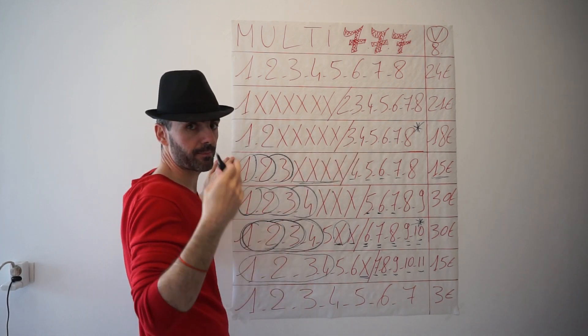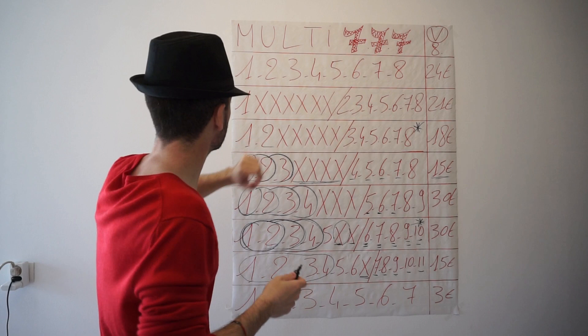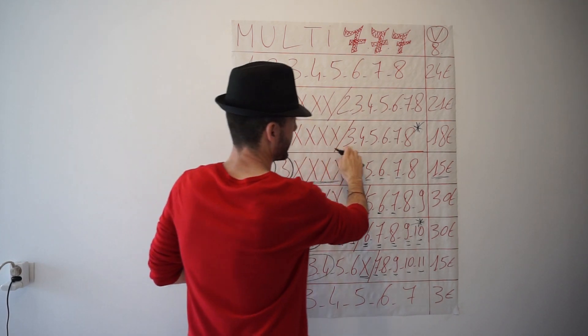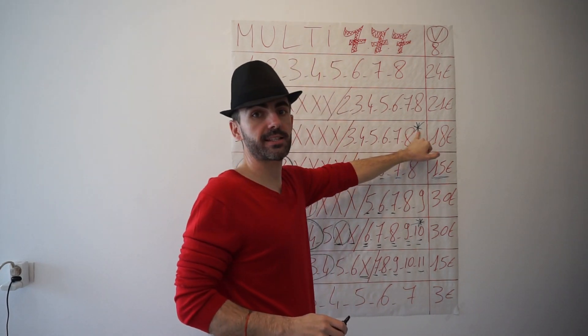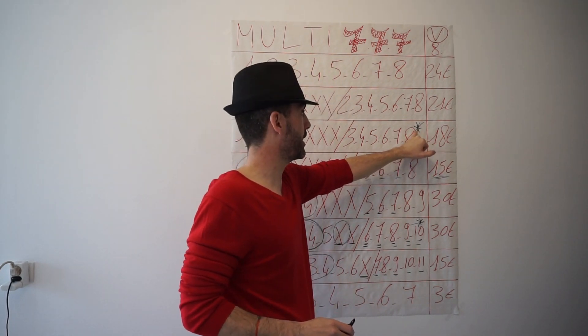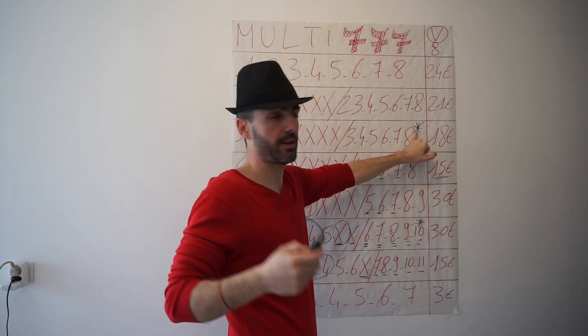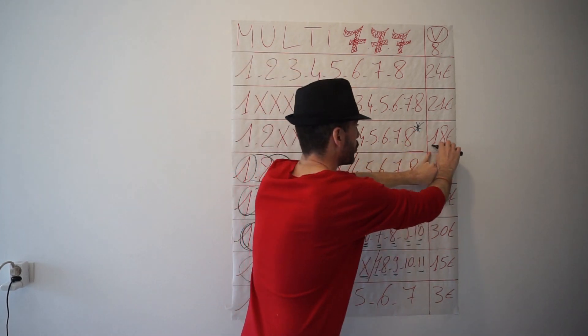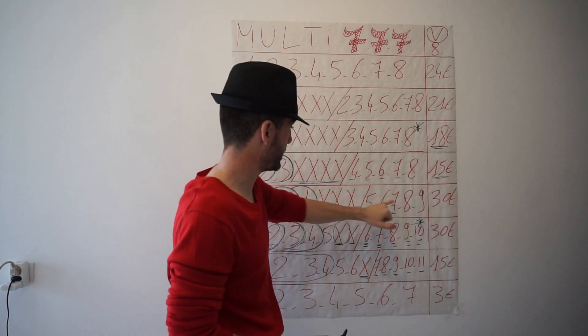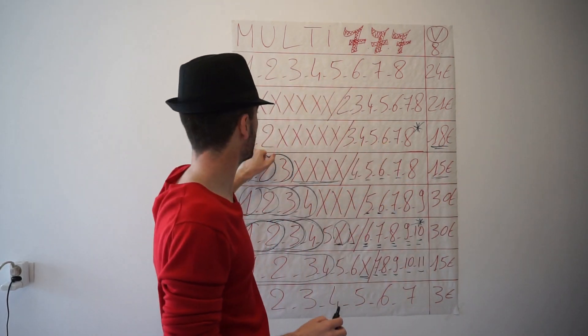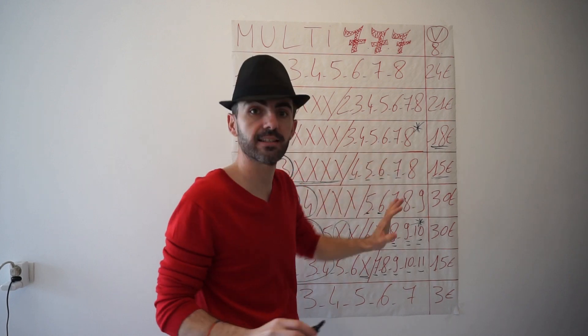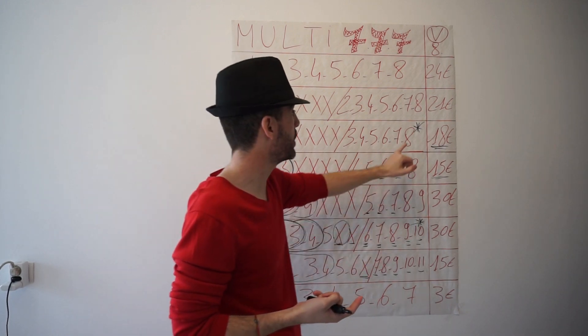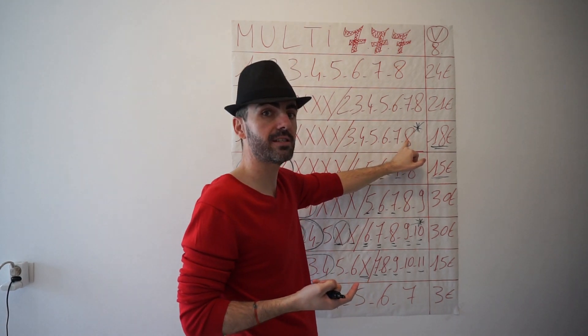Ensuite on passe au jeu deux de base, cinq croix et six derrière. Je lui ai mis le petit astérix parce qu'hier un abonné m'a fait la réflexion : pourquoi il y a six chevaux dans le même jeu à 18 euros que le multi en 6? Vous avez vu, c'est toujours cinq derrière. Là il y en a six parce que deux de base, cinq croix, cinq derrière, ça n'existe pas en multi 6 et en multi 7 on est obligé de mettre le sixième cheval.